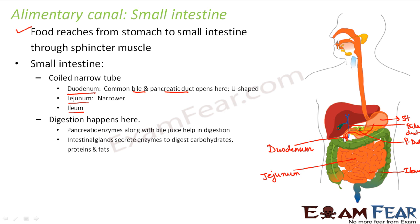The jejunum is a coiled structure but narrower than the duodenum. The duodenum is the widest part of the small intestine, becoming progressively narrower through the jejunum and ileum. The food coming from the stomach is acidic; the bile juice in the duodenum makes that acidic food alkaline, enabling the pancreatic enzymes to act on it.